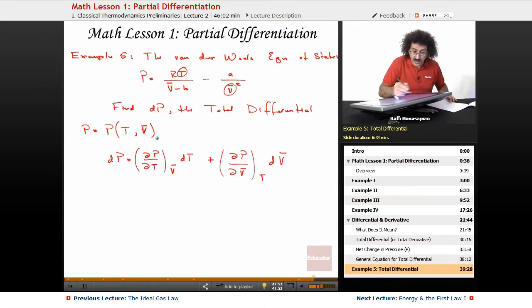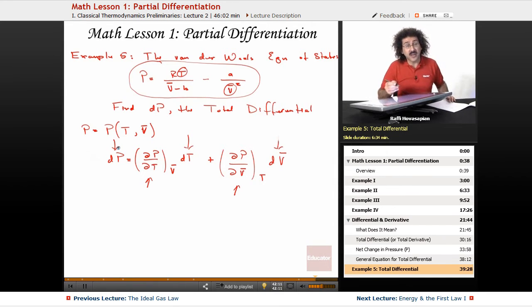We need to find, we have the function right here. So once we actually have a function, we'll find the derivative of that function with respect to T, we'll find the derivative with respect to V, and we'll just put them in there. We'll have our actual total differential for a specific function, in this case, the van der Waals equation. Let's go ahead and do it.